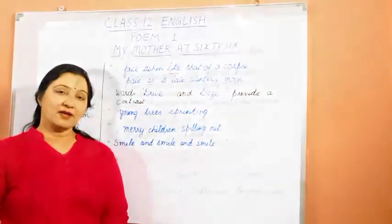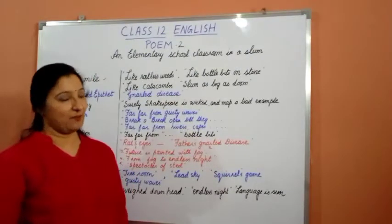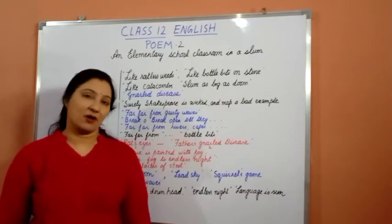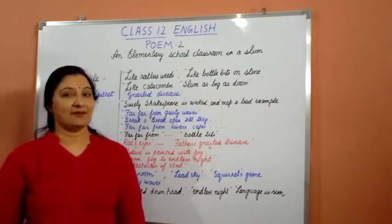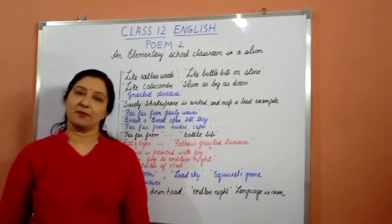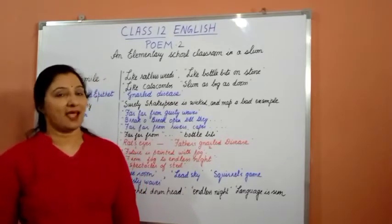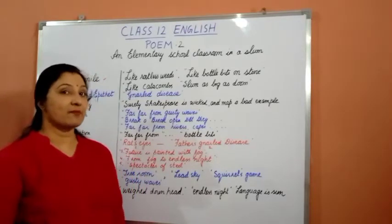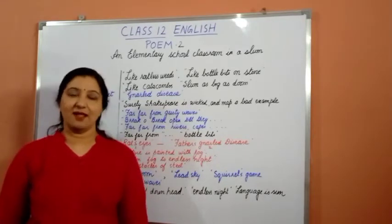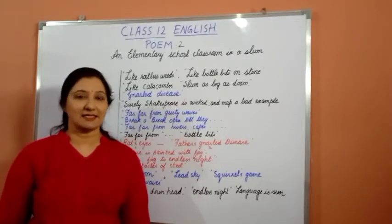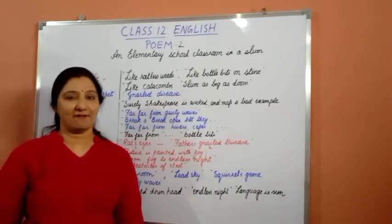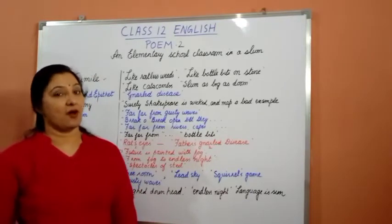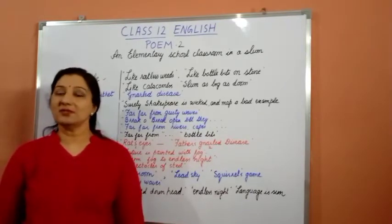Now let us move on to the poetic devices used in the second poem, 'An Elementary School Classroom in a Slum'. This poem is written by Stephen Spender. In this poem he talks about the life of slum children, and he wants there to be some upliftment in their lives. He talks about social injustice and class inequalities.